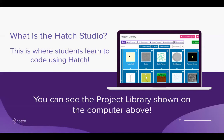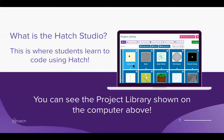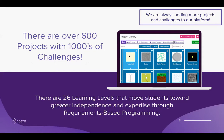The Hatch Studio is where students learn to code. When students start out, we have what we call the new student experience, which guides them at early levels to ensure they're progressing properly. Originally students had trouble starting right away, so we broke it down into clear steps. Once they're ready to interact with the program fully, they have access to our project library. There are over 600 projects and thousands of challenges, and 26 learning levels that move students to greater independence through requirements-based programming.